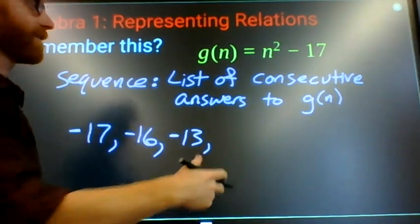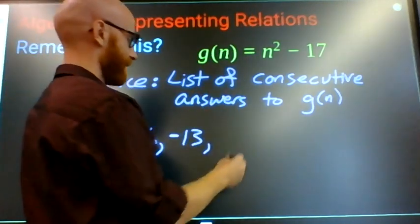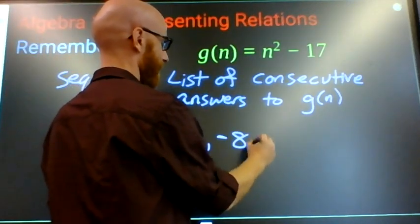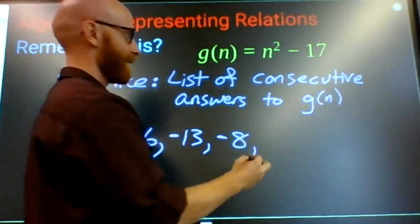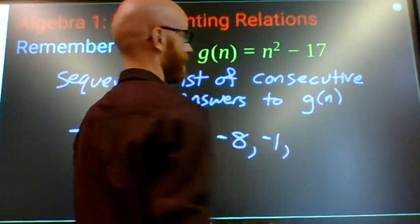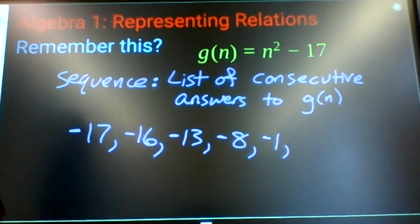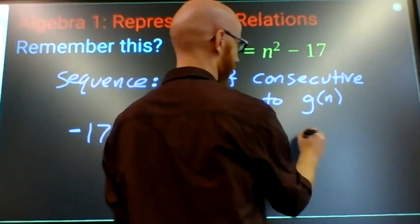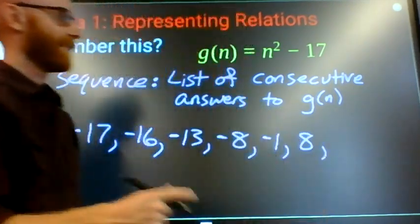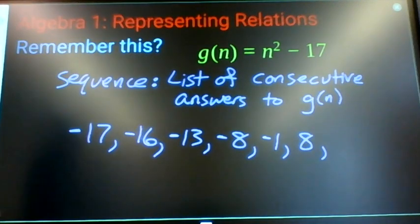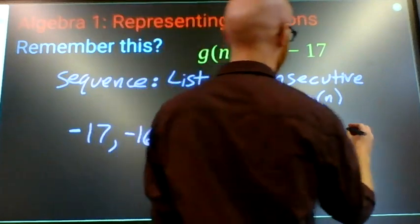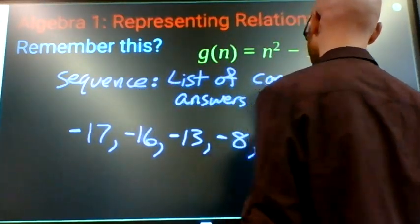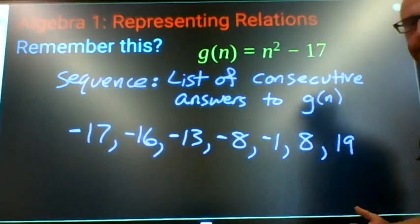Three squared, nine minus 17 is negative 8. Four squared, 16 minus 17 is negative 1. Five squared, 25 minus 17 is positive 8. Six squared, 36 minus 17 is 19. And that's how you build a sequence.